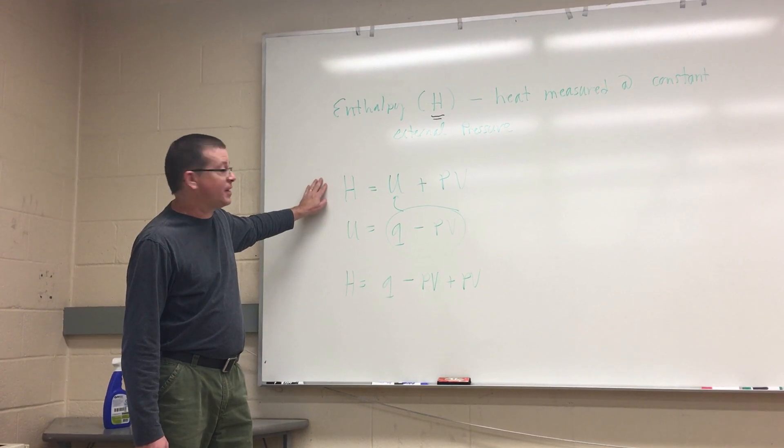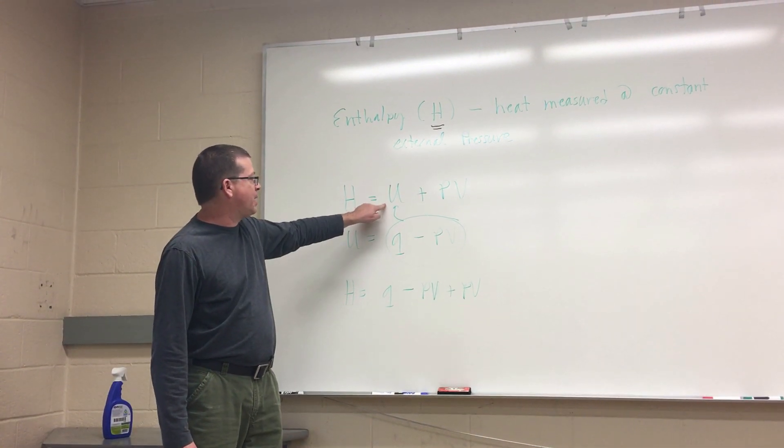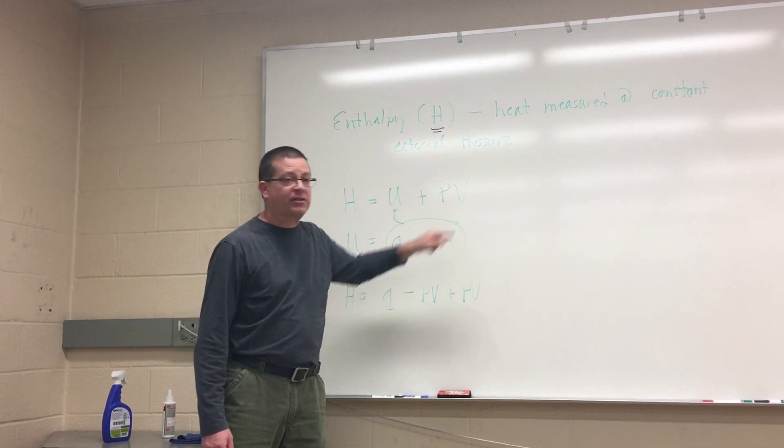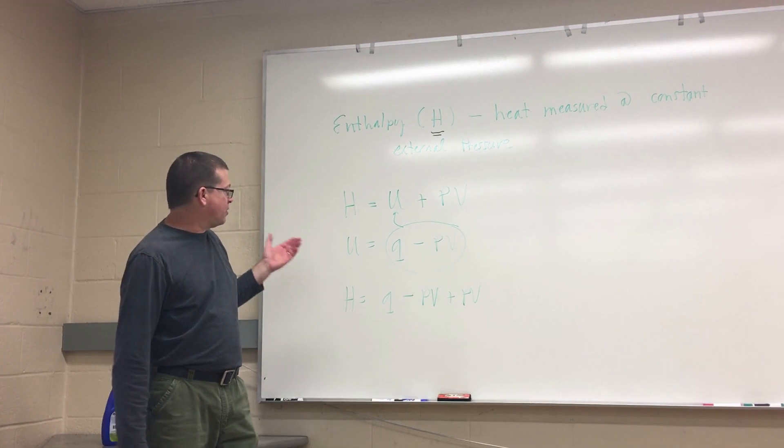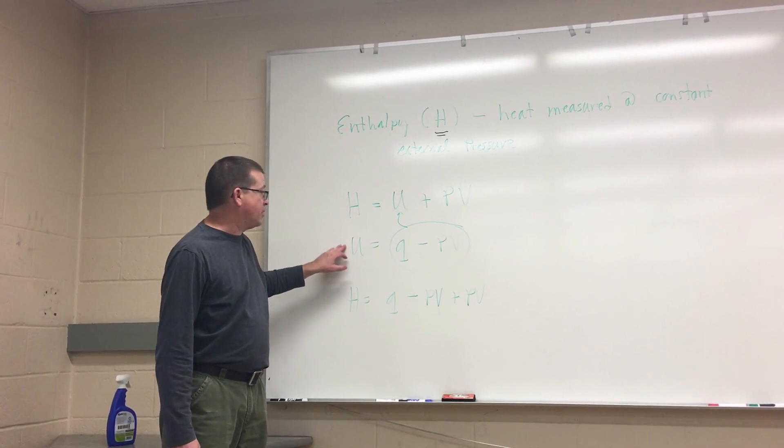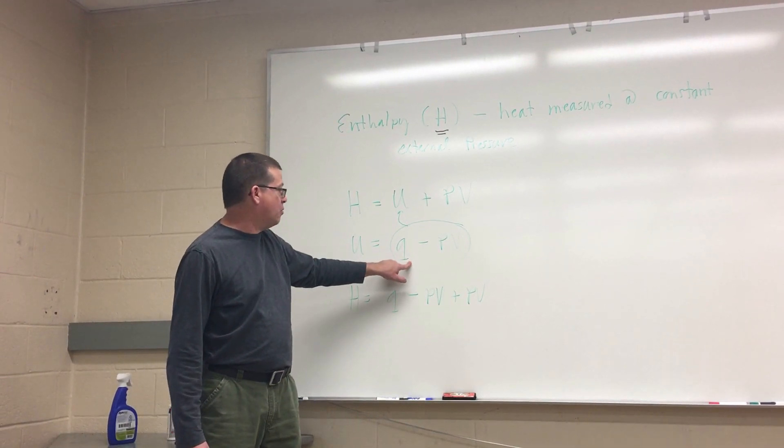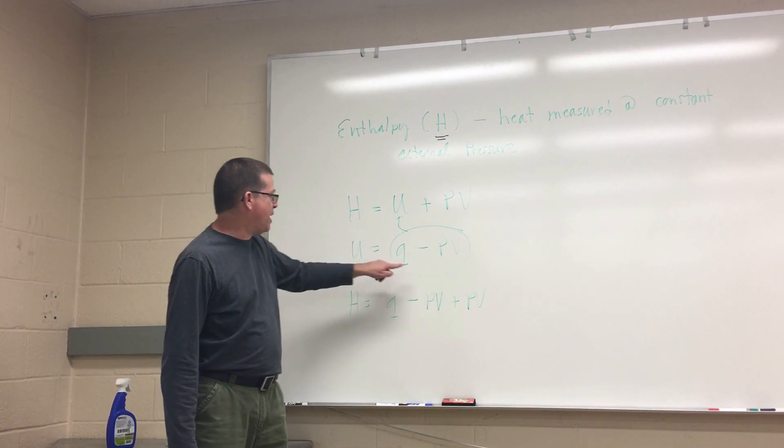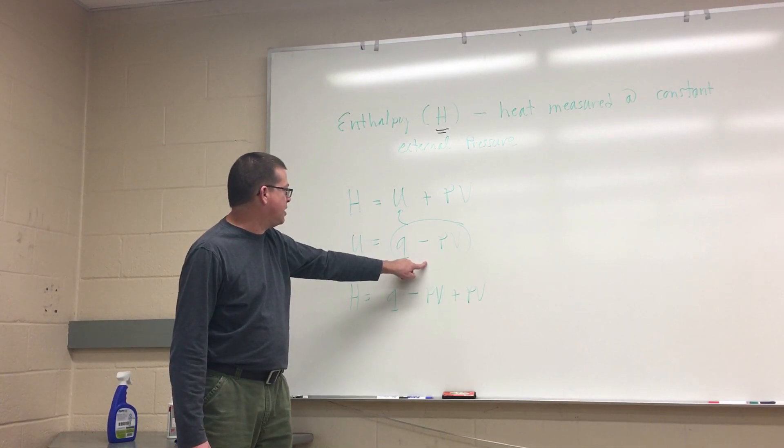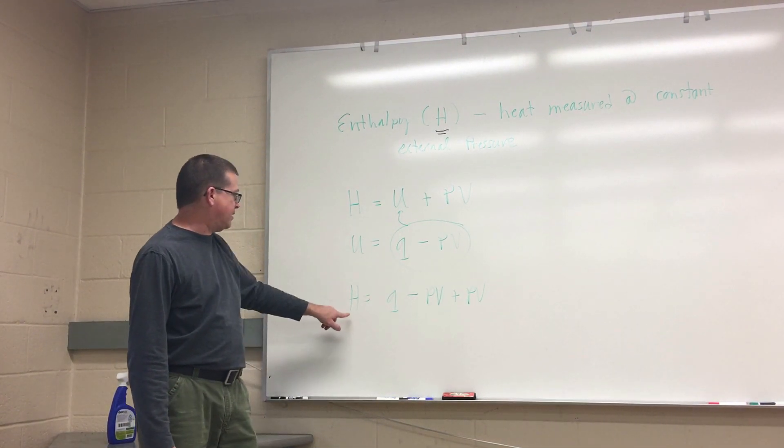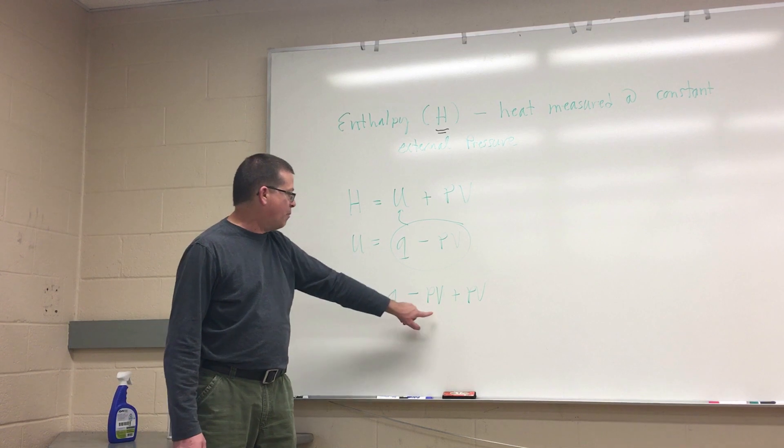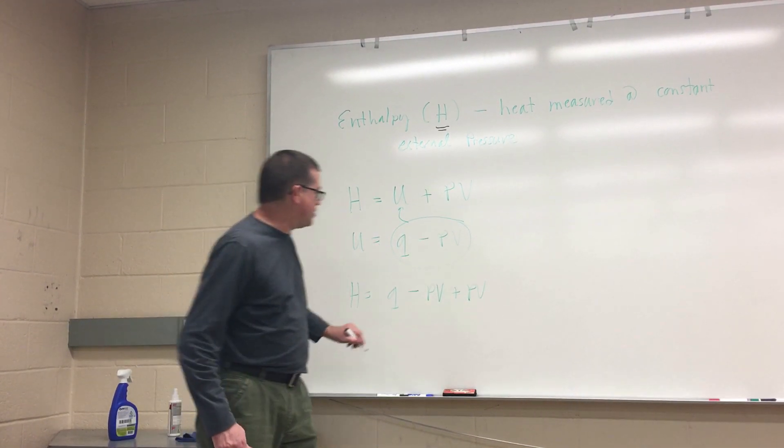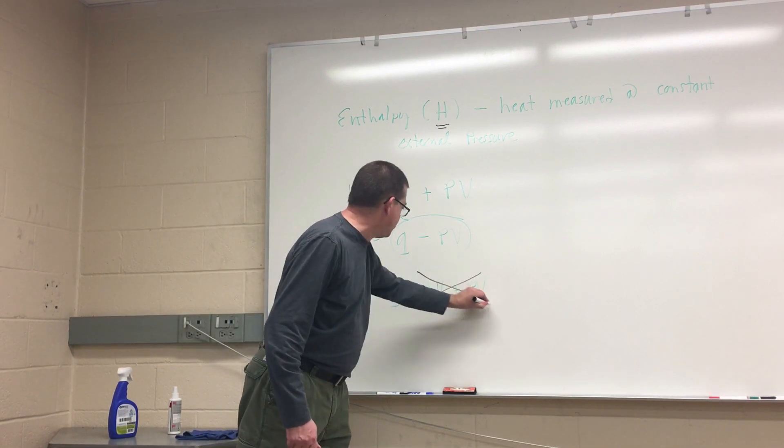The formal definition says that the enthalpy H is equal to the sum of the internal energy of the system plus the PV work associated with the system. Now we also know that U, or internal energy, is equal to Q, or heat, minus P delta V. So I can make this substitution and what I get is enthalpy is equal to Q minus PV plus PV. So you can see what happens here is that PV terms are going to cancel each other out.